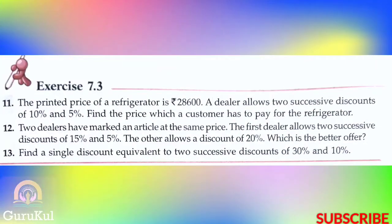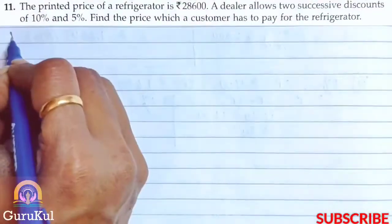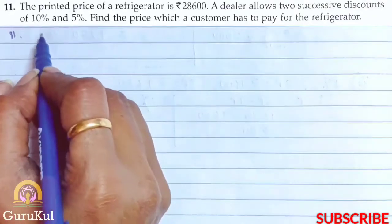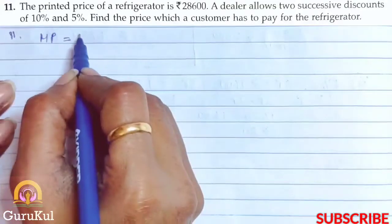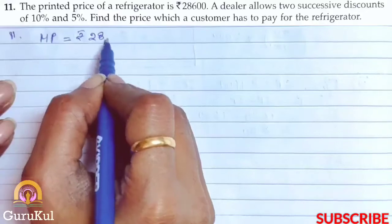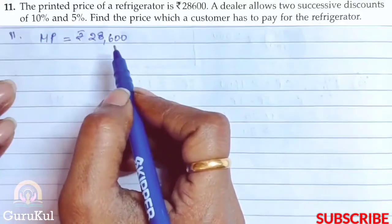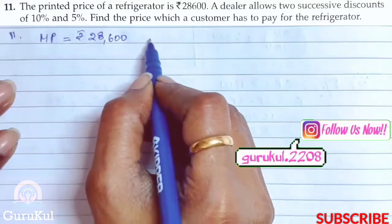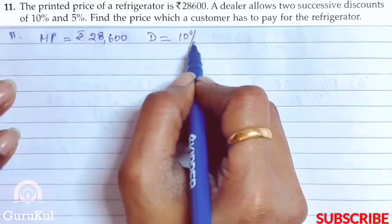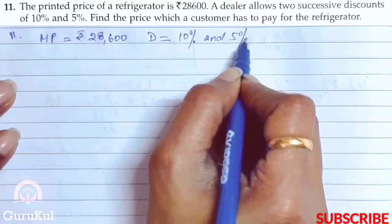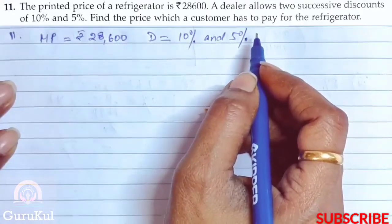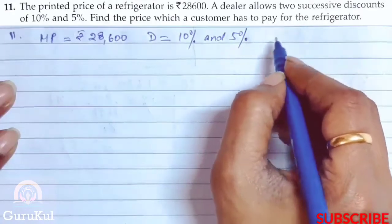Today I am going to start with part 4 of exercise 7.3, question number 11. The printed price of the refrigerator, which is the marked price, is Rs. 28,600, and the dealer allows 2 successive discounts on the refrigerator: first 10% and then again 5%. We need to find the price which the customer has to pay for the refrigerator, that is the selling price.